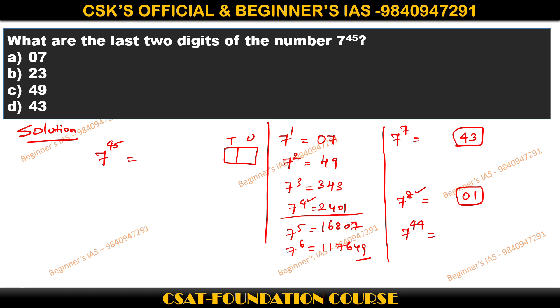Then 7 power 5 is nothing but 07, obviously the multiple of 5. So that is nothing but 45, that is also going to be 07, which means that the last two digits, which means the tenth place and the unit place, is going to be 07 for 7 power 45.